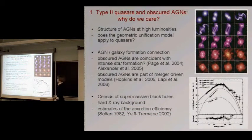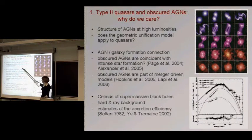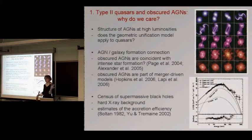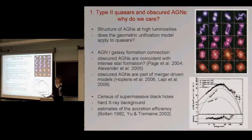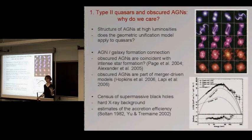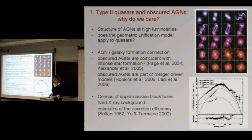Why do we care about these objects? The structure of AGN itself is an interesting topic. One possible question is whether the same geometric unification model applies to quasars — objects with very high luminosities — or if there's any dependence of the structure and covering fraction of obscuring material on luminosity. Another question, which is really fashionable these days, is the connection between AGN activity and the formation of the host galaxy. This was prompted by the discovery of the very strong correlation between black hole mass and the velocity dispersion of the bulge in galaxies.